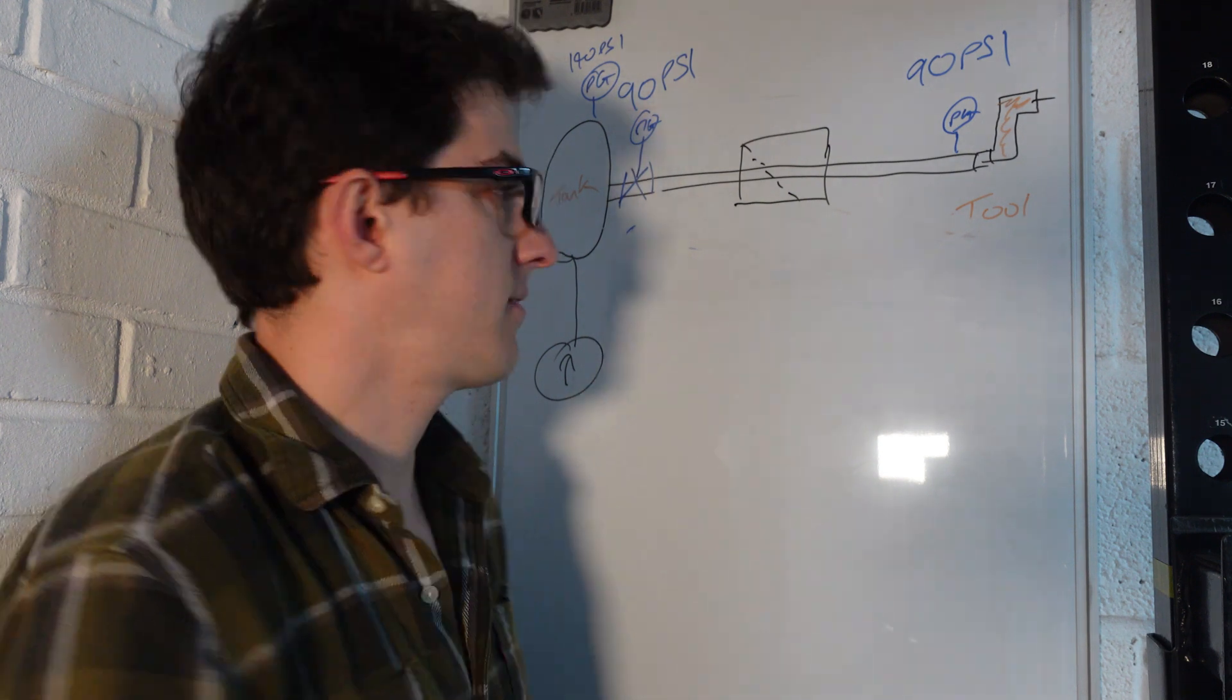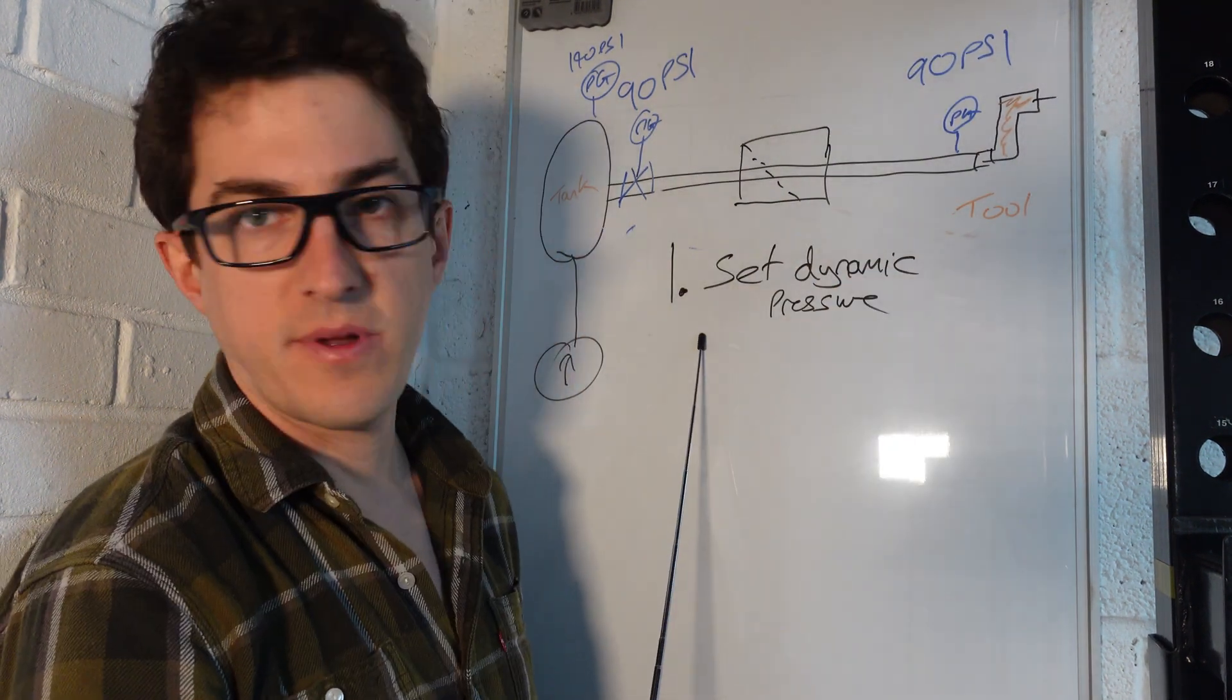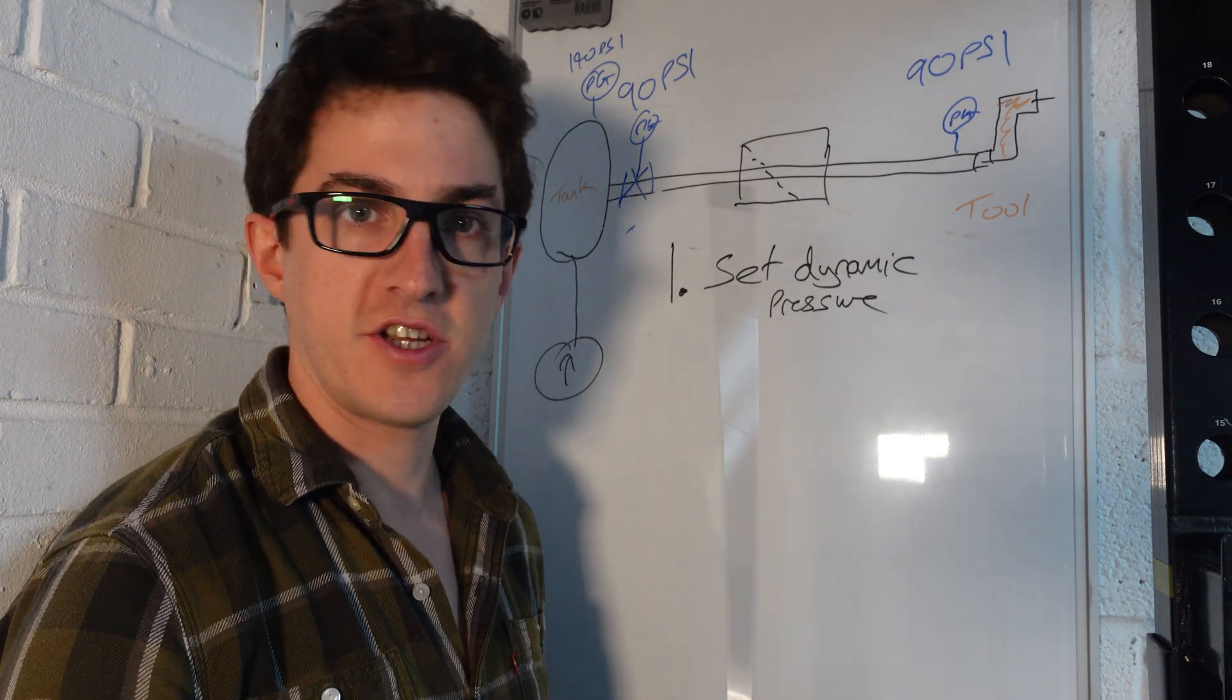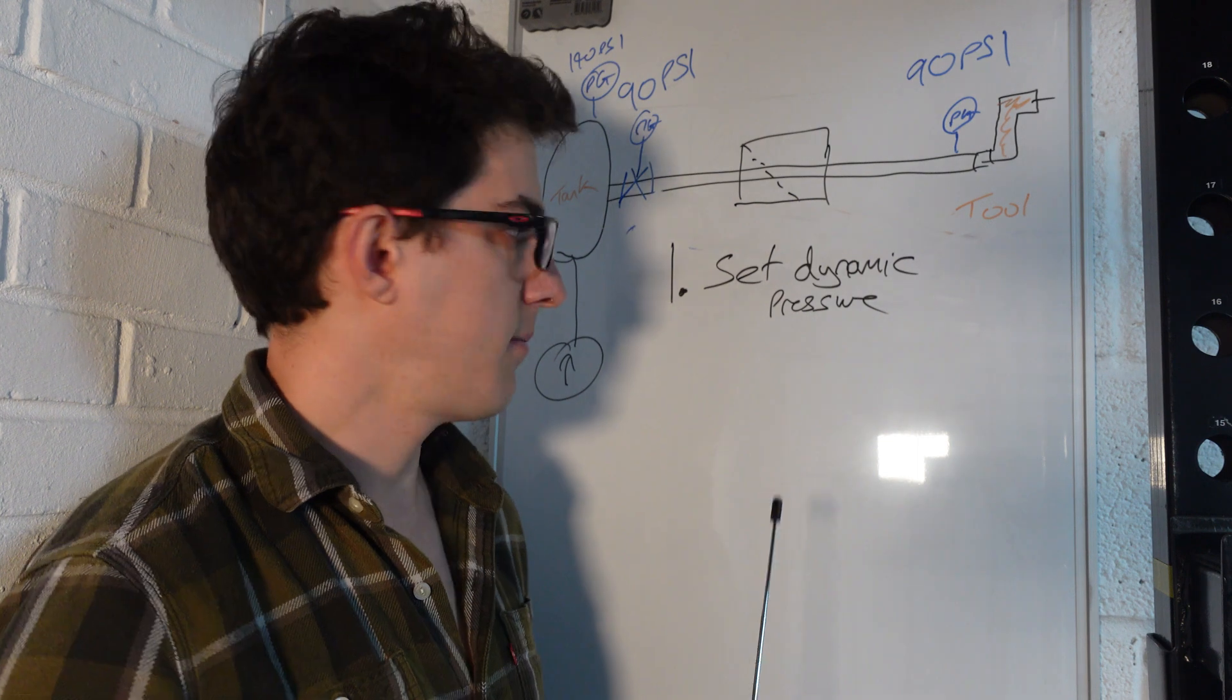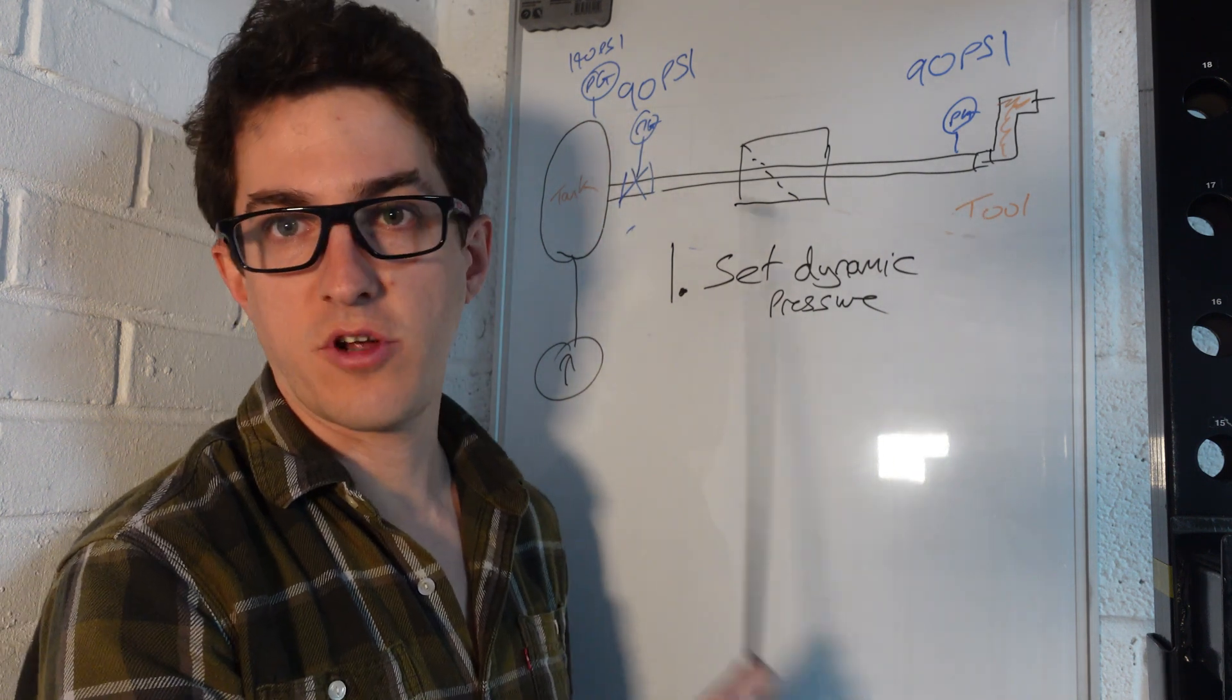So with that in mind, I have two main tips. Number one: first tip is to set the dynamic pressure of the tool. I don't know if that's the official term for it, but that's what I call it because essentially you're setting the pressure of the tool while it's operating.